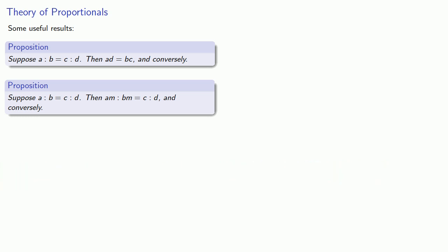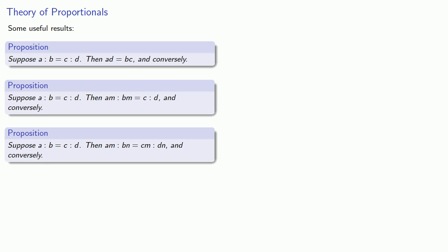And again, if a is to b as c is to d, then am is to bn as cm is to dn, and conversely.